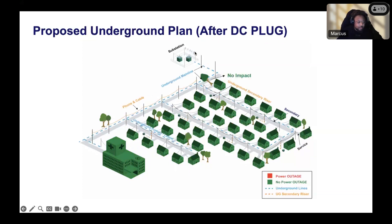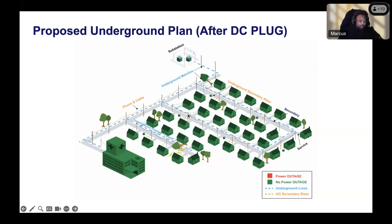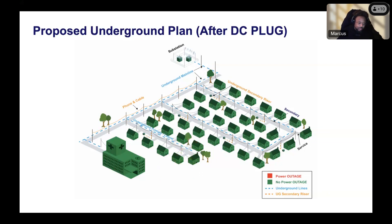This is an example of the same tree falling down, and as you can see, there is minimal impact. However, there is another tree causing an outage on a secondary line further down, and that only puts three houses out. Undergrounding the lines in this neighborhood will provide greater reliability for most, if not all, of our customers.